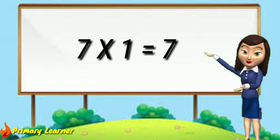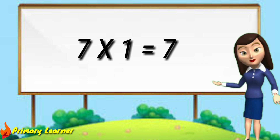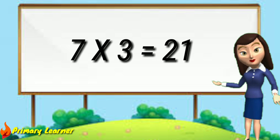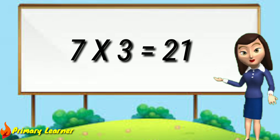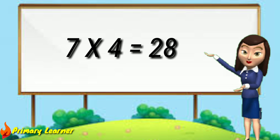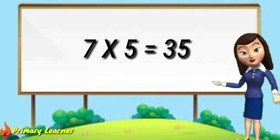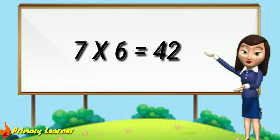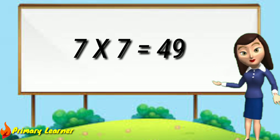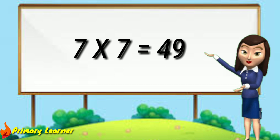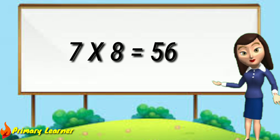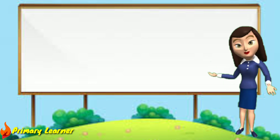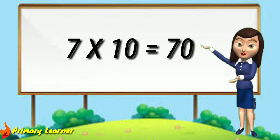Table of seven. 7 ones are seven. 7 twos are fourteen. 7 threes are twenty-one. 7 fours are twenty-eight. 7 fives are thirty-five. 7 sixes are forty-two. 7 sevens are forty-nine. 7 eights are fifty-six. 7 nines are sixty-three. 7 tens are seventy.